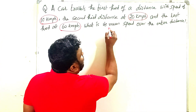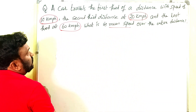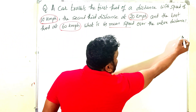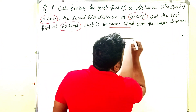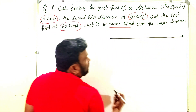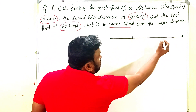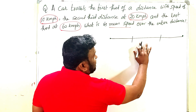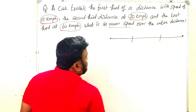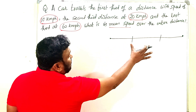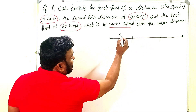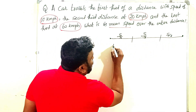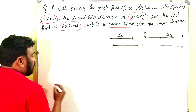We have to find out the mean speed or average speed. According to the problem, this is the starting point and this is the final point. The total distance is taken as S. This is divided into three equal parts: the first third distance is S/3, the second third is also S/3, and the third part is also S/3. So the total distance is S.